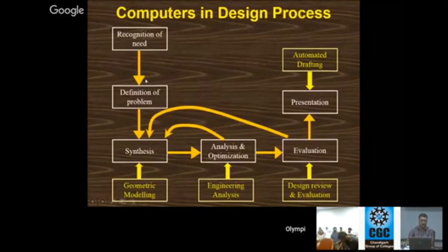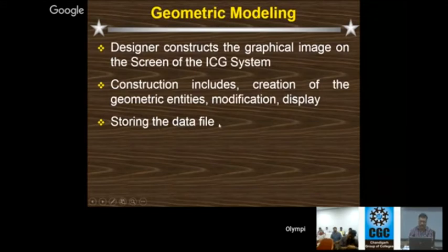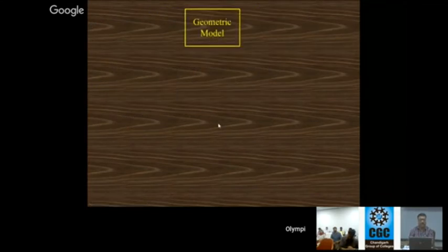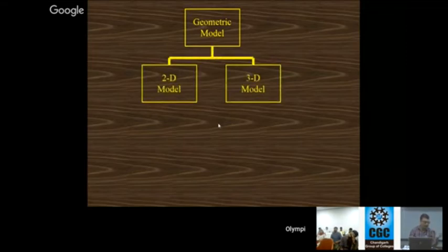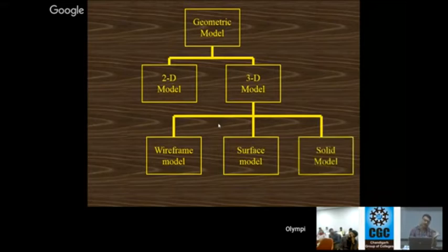In geometric modeling, the designer constructs the graphical image on the screen of the ICG system. Construction includes creation of geometric entities, modification, display, and storing the data file. Geometric models come in two kinds: 2D model and 3D model. The 3D model further has three kinds: wireframe model, surface model, and solid model.